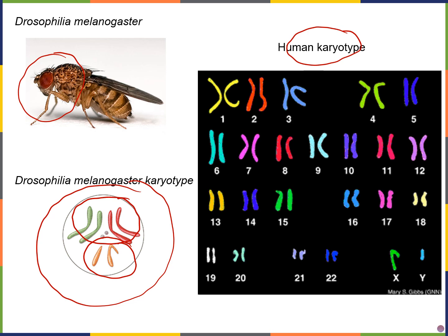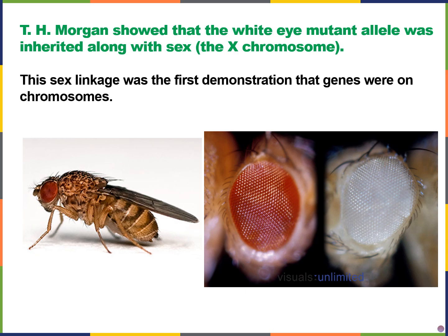Looking at the human karyotype on the right, chromosomes 1 through 22 are autosomes — not related to sex — and are arranged by size for the most part. We have one pair of sex chromosomes, the 23rd pair, and this appears to be a male because a Y chromosome is visible. Thomas Hunt Morgan found that the gene for eye color was located on the X chromosome, and this was really the first demonstration that genes were located on chromosomes.